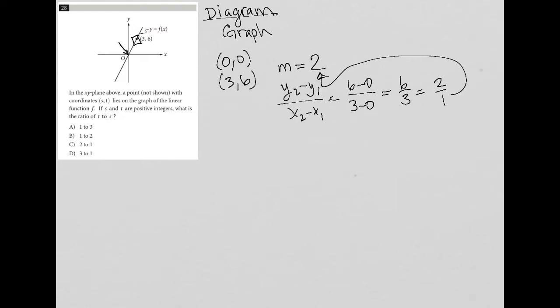The question says in the xy plane above, a point not shown with coordinates (s,t) lies on the graph of the linear function f. So there's some point that we don't see that has s,t. Now let's not forget that s,t is the same as x,y - the s is the x portion, and the t is the y portion of that ordered pair.